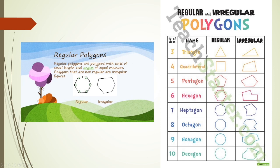For example, here with three sides — triangles. All sides and angles are equal here, so this is a regular triangle, whereas all three sides and angles are different here, making it irregular. Similarly, regular and irregular quadrilaterals, regular and irregular pentagons, and regular and irregular hexagons — this regular hexagon has six equal sides, while the irregular one has sides of different lengths. This is also a heptagon with seven sides.